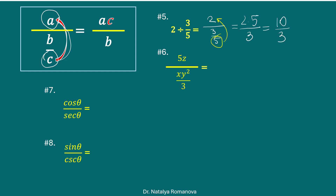Next example: we have 5z divided by xy squared over 3. The 3 goes up to 5z. We have 5 times 3, which is 15z divided by xy squared.